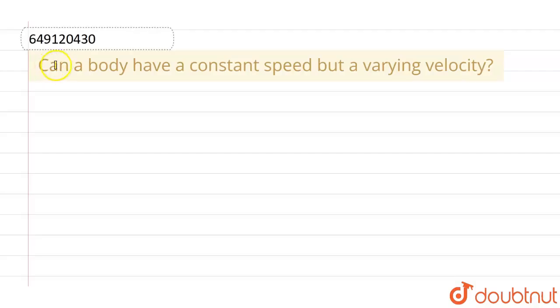Hello everyone, if we talk about this question, this given question is: can a body have a constant speed but a varying velocity?